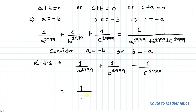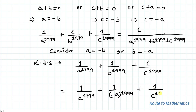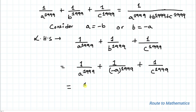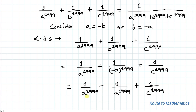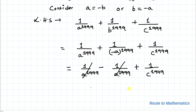The left-hand side is 1/a^1999 + 1/(-a)^1999 + 1/c^1999. Since 1999 is an odd number, (-a)^1999 = -a^1999. So we have 1/a^1999 - 1/a^1999 + 1/c^1999. These two terms cancel out, leaving 1/c^1999.